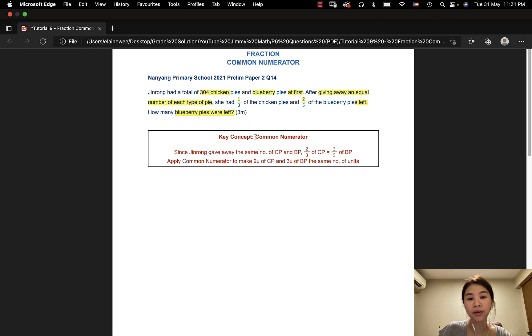Since Jinrong had one third of the chicken pies and two fifths of the blueberry pies left, that would mean two third of the chicken pies and three fifths of the blueberry pies given away are the same.